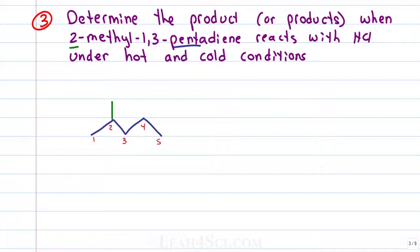On carbon number 2, I have a methyl group and carbons 1 and 3 have a diene meaning 1 pi bond each starting on carbon 1 and another one starting on carbon 3. The next thing I want to recognize are the reaction conditions.